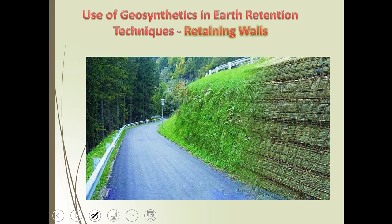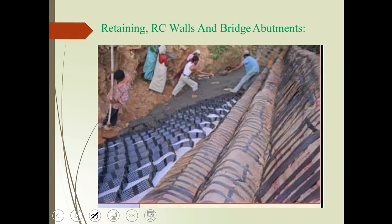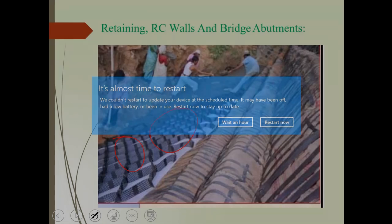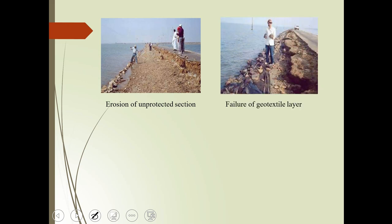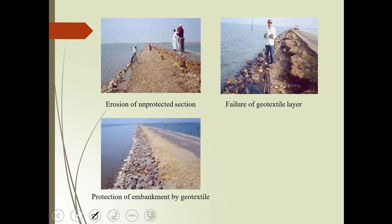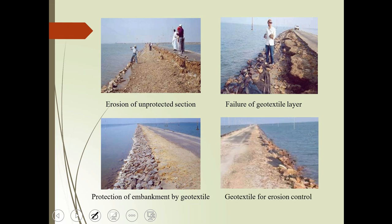Use of geosynthetics in earth retention: slopes are stabilized by geosynthetics, and retaining walls and RCC walls can protect slopes. We can use geosynthetics in erosion of unprotected sections, failure of geotextile layers, protection of embankments by geotextile, and erosion control. Nowadays, geotextiles are essential for different types of structures and we can get great benefit from them. Thank you very much.